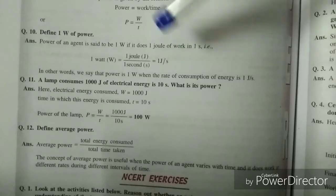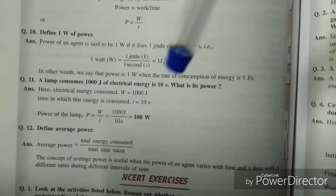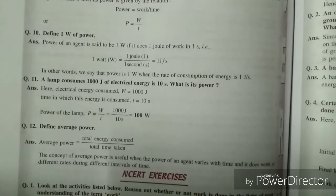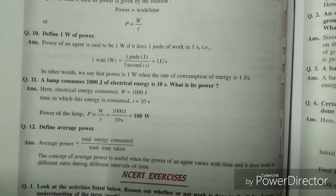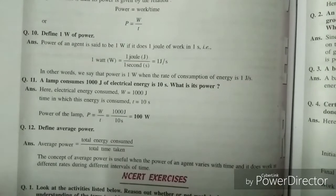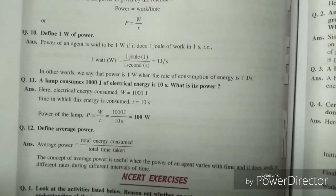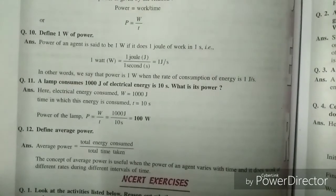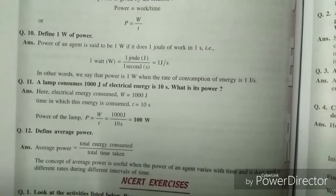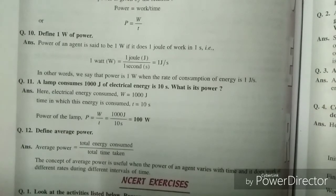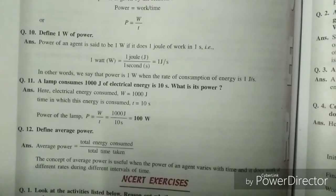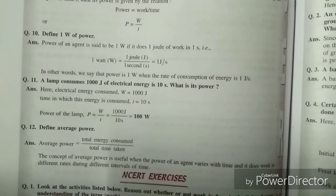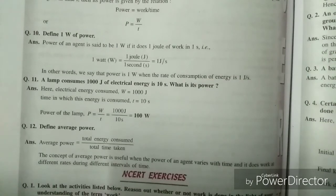The last question defines average power: average power equals total energy consumed upon total time taken. The concept of average power is useful when the power of an agent varies with time and it does work at different rates during different intervals of time. These were all the in-text questions of your Work and Energy chapter. See you all in the next video.